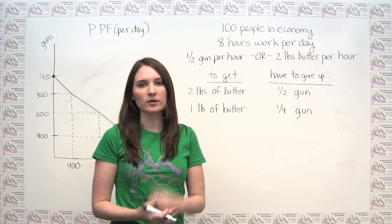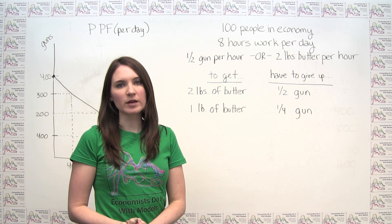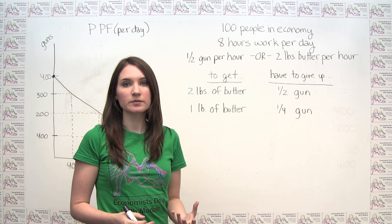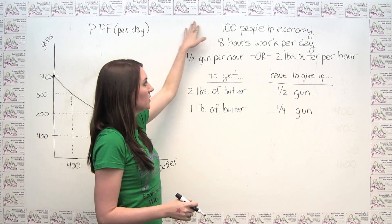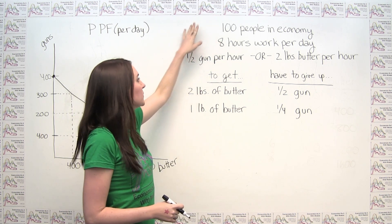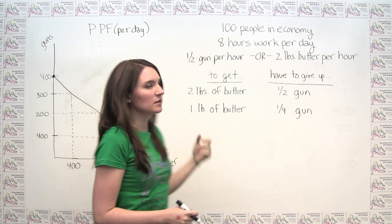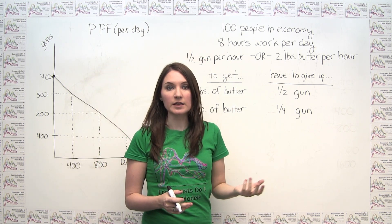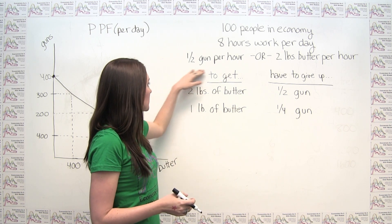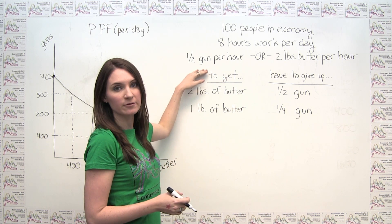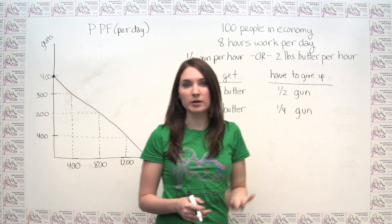Before we talk directly about the slope of the production possibilities frontier, let's think a little bit about opportunity costs. Let's continue the example we've been working with: 100 people in our economy, each working 8 hours per day. They have choices in how they can allocate their time. For each hour that they work, a person can either produce half of a gun or 2 pounds of butter.